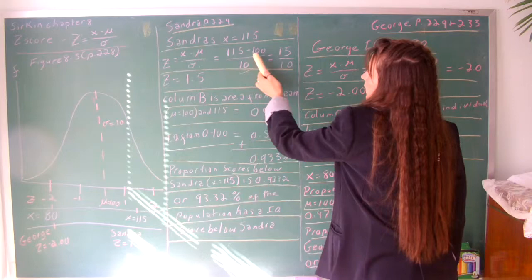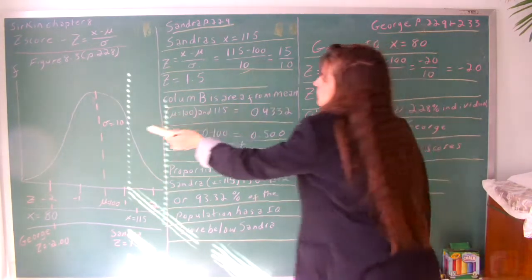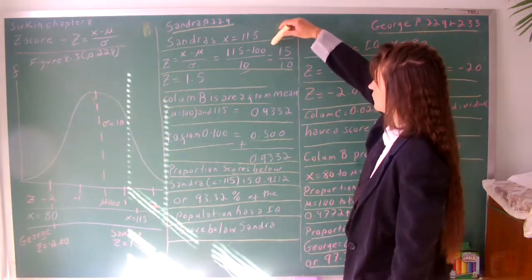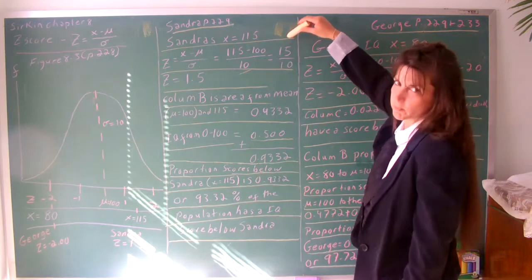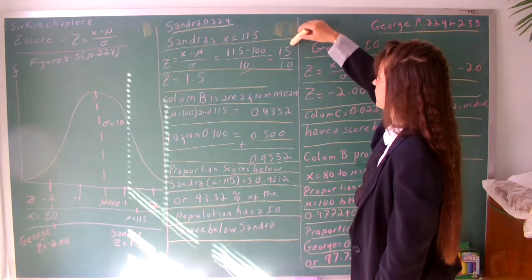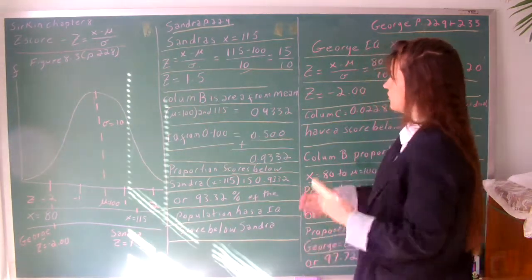We put Sandra's score, which is 115, minus mu, which is 100, over the population standard deviation, which is 10. Show all your math steps so you notice if you make a mathematical error. The next step is 15 divided by 10 equals 1.5.